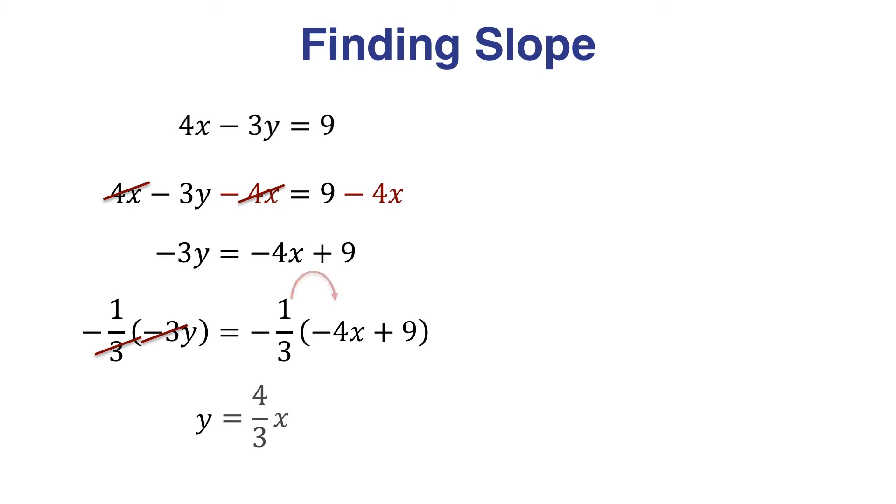Negative times negative is positive, and 1 third times 4 is just 4 thirds. Then negative 1 third times positive 9 is...